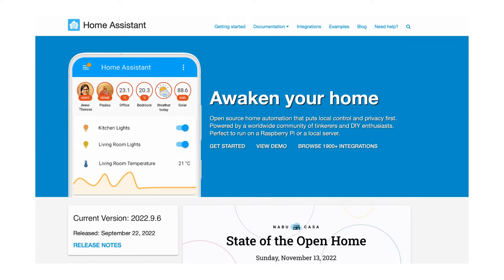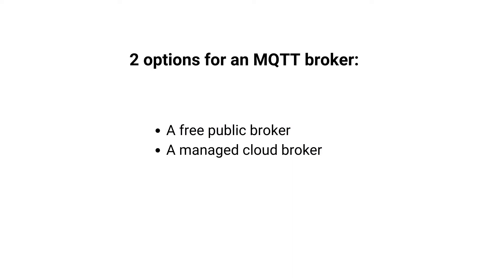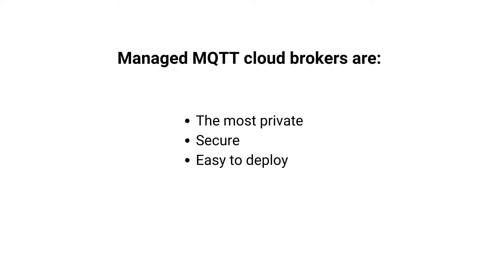Home Assistant is an open source home automation platform that integrates MQTT enabled devices. To make this integration happen you will need to use an MQTT broker. Home Assistant users have two options for an MQTT broker: using free public brokers, setting it up yourself, or using a managed cloud broker. A managed MQTT cloud broker is definitely going to be the most private, secure and easiest option to deploy.